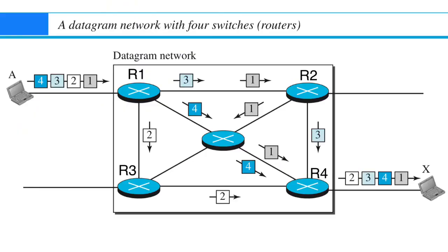Because of variation in the delay of each packet it will be received at different times. Hence the packets are rearranged in the receiver. In this example network you can see source A and destination X. There are 1, 2, 3, 4 packets in this. And the routers in this network are R1, R2, R3 and R4.